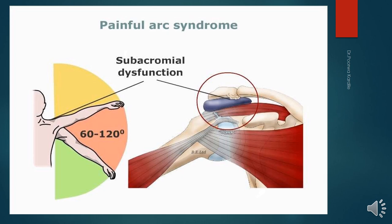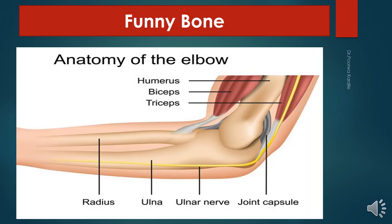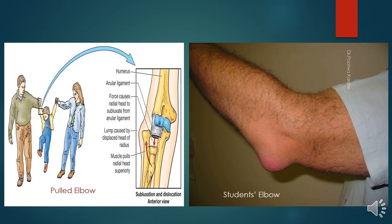The ulnar nerve passes posterior to the medial epicondyle of the humerus. If the posterior medial aspect of the elbow is banged against a hard object, it may cause temporary ulnar nerve damage, resulting in a tingling sensation radiating to the ulnar side of the forearm and hand. Because of these sensations, the area of the elbow is often known as the funny bone or crazy bone.